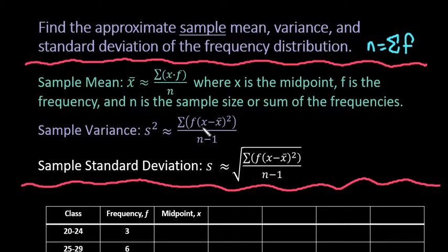The sample variance, we actually have to find the mean first, and then you have to take each individual midpoint, subtract the mean, then square the deviations, multiply it times the frequency, find the sum of that column, divide by n minus 1, and that will give you your sample variance. And then your sample standard deviation is just the square root of your variance. So once you've found the variance, you just do the square root.